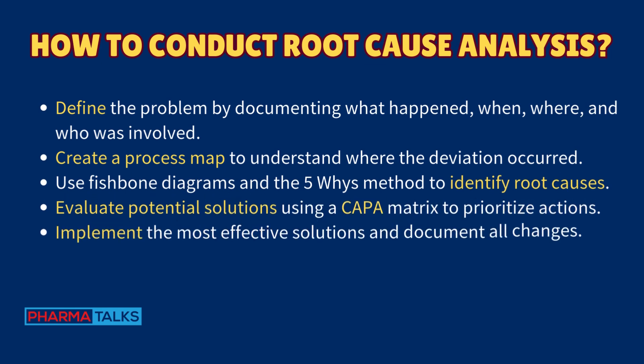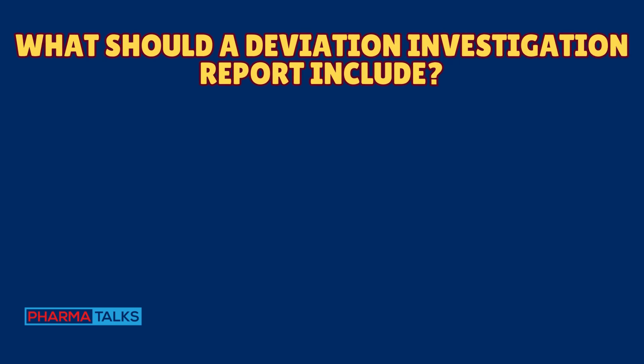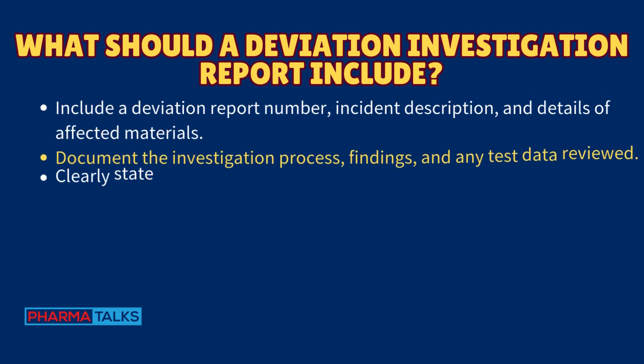To conduct root cause analysis: define the problem by documenting what happened, when, where, and who is involved. Create a process map to understand where the deviation occurred. Use fishbone diagrams and the Five Whys method to identify root causes. Evaluate potential solutions using a CAPA matrix to prioritize actions, then implement the most effective solutions and document all changes.